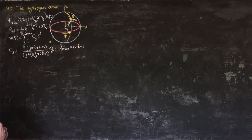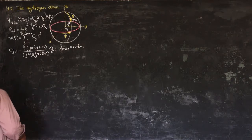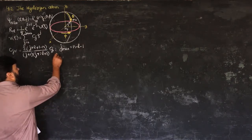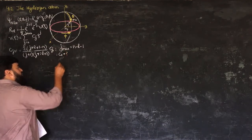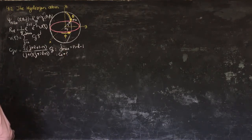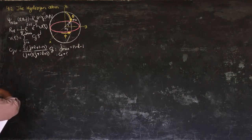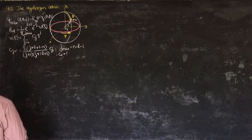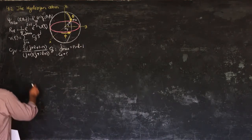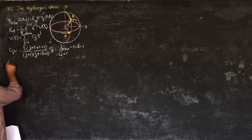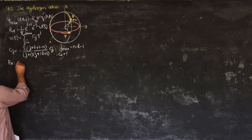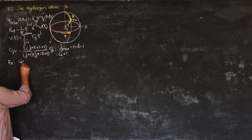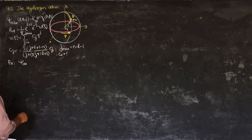Here j_max equals n − l − 1. We start with coefficient c_0, which we consider the normalization constant. In a previous exercise we found the wave function for the ground state ψ_100, where n=1, l=0, m=0.